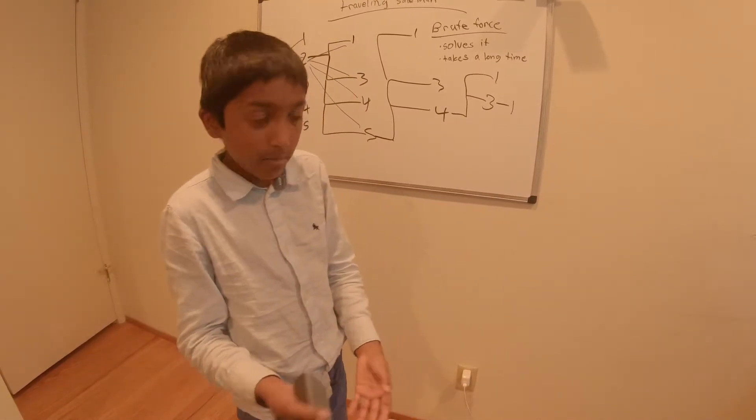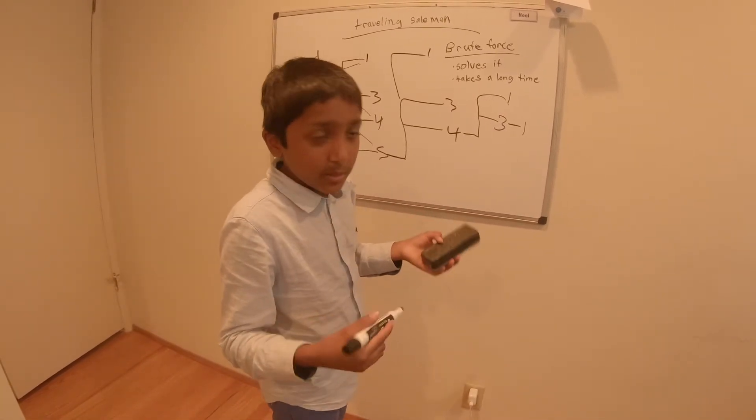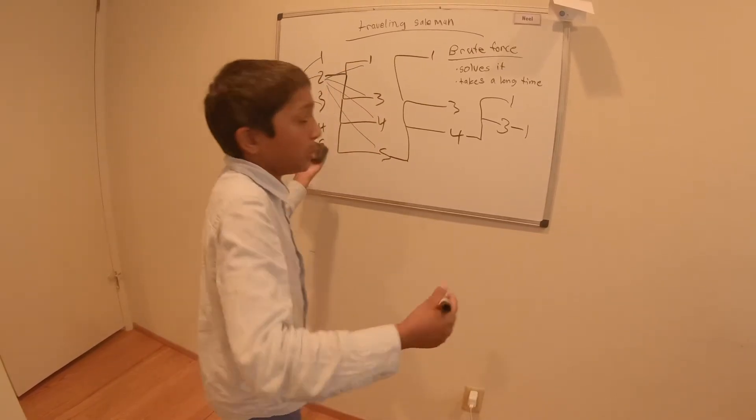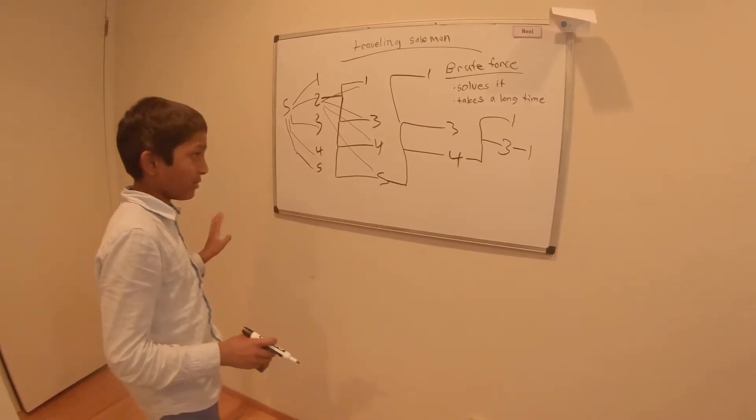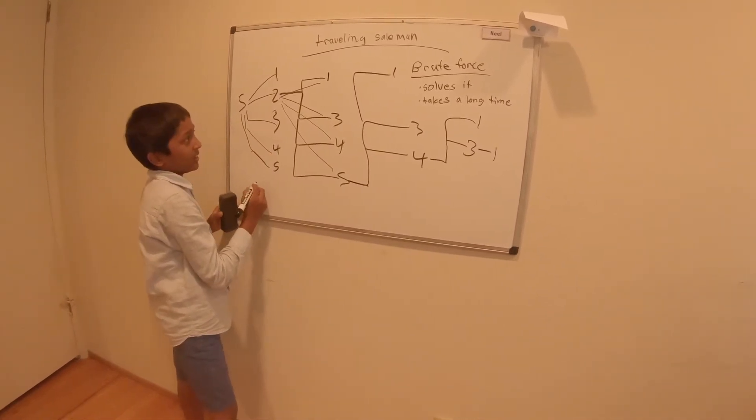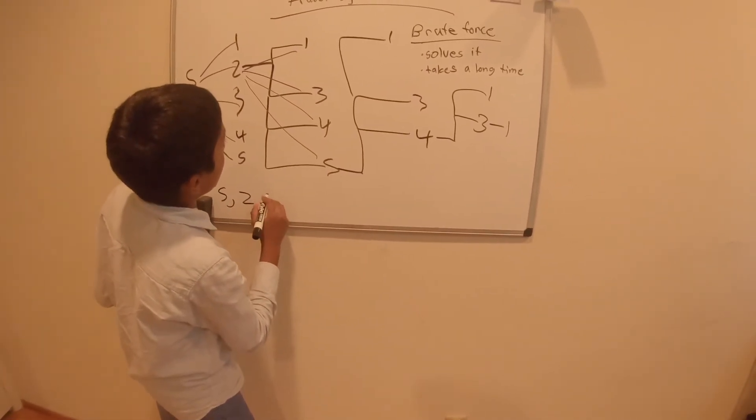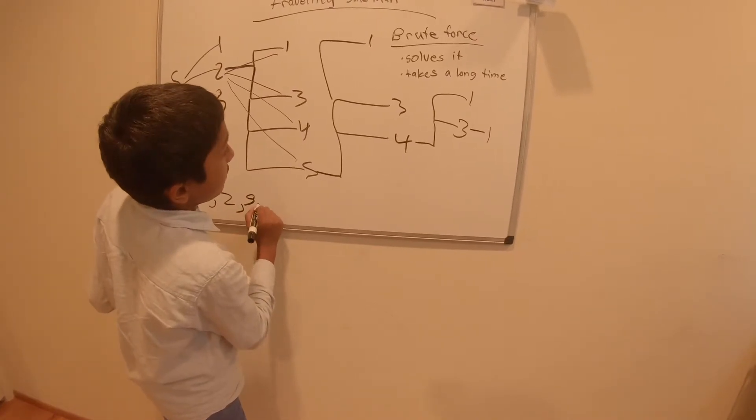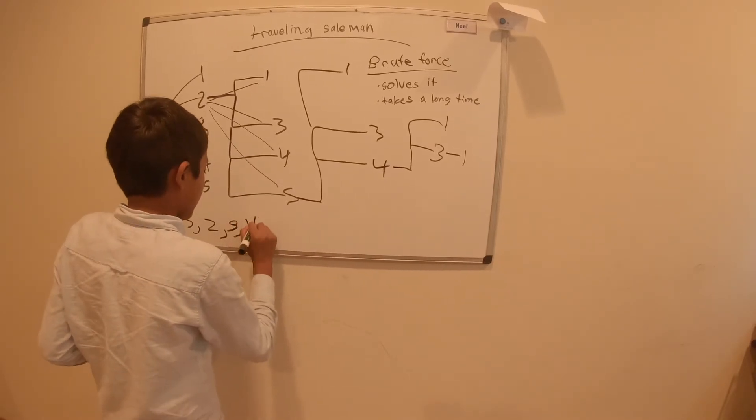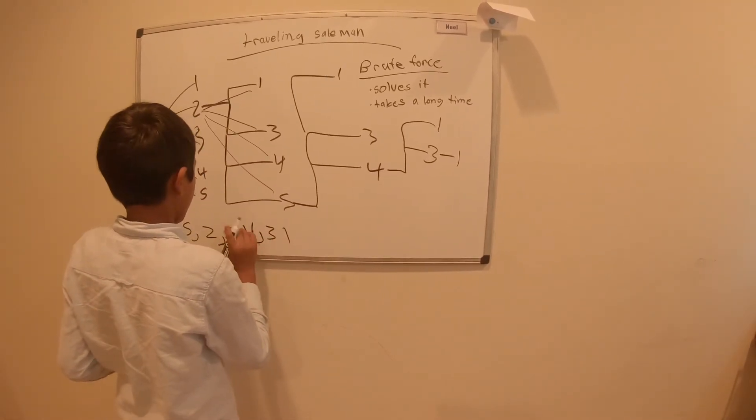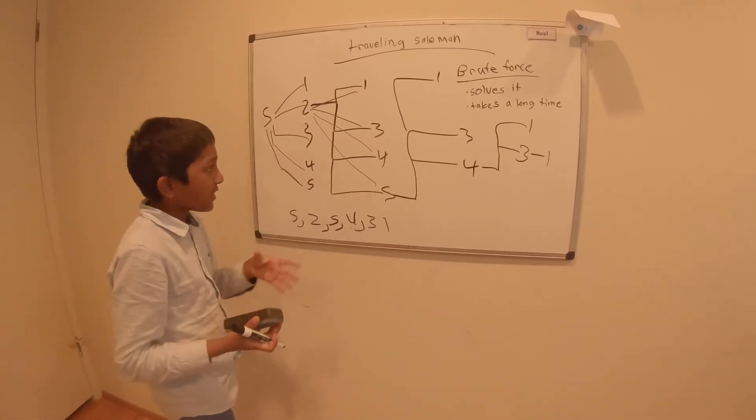So if you're gonna build a service like Google Maps or something, you're probably either gonna use this or the modified brute force. So this would give you S to two to five to four to three to one. And that's another one.